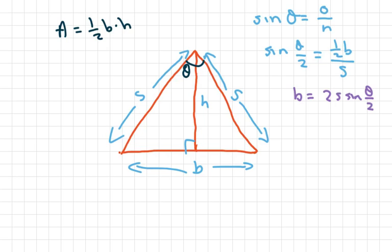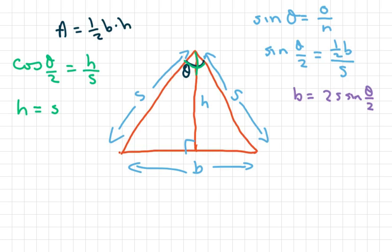Now let's do cosine. Cosine of theta — since we only have half of theta because we split the triangle in half, we divide by 2 — equals height over side. When you cross multiply and solve for H, you get H equals S times cosine of theta over 2.